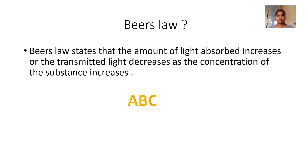What is Beer's Law? Beer's Law states that the amount of light absorbed increases, or the transmitted light decreases, as the concentration of the substance increases. You should remember that Beer's Law is concerned with concentration. A simple way to remember: the alphabet next to B is C, and C stands for concentration. That is how you remember — Beer's Law deals with concentration.